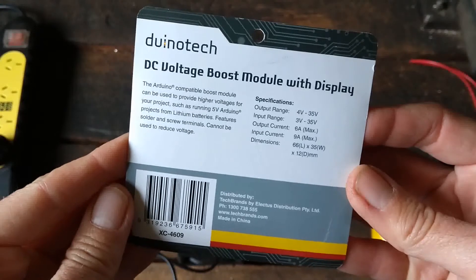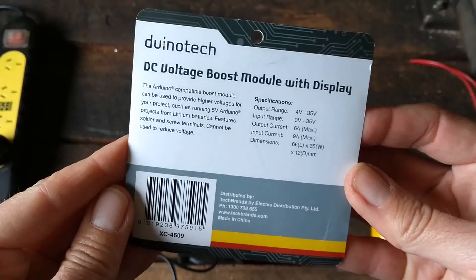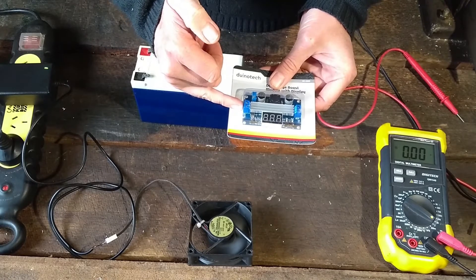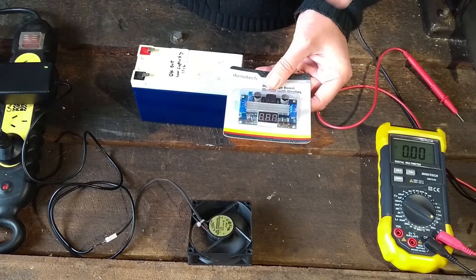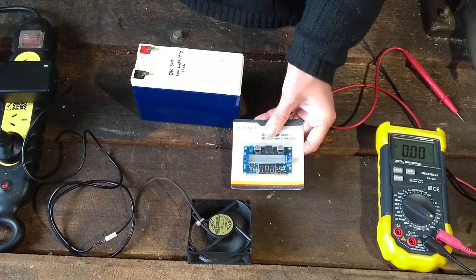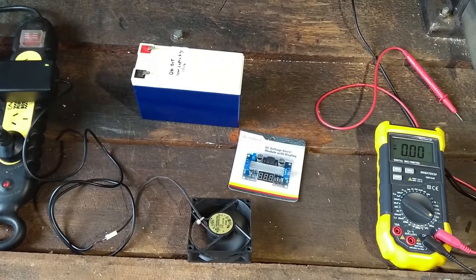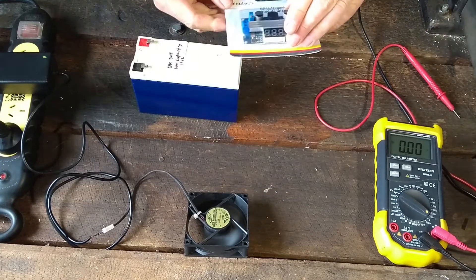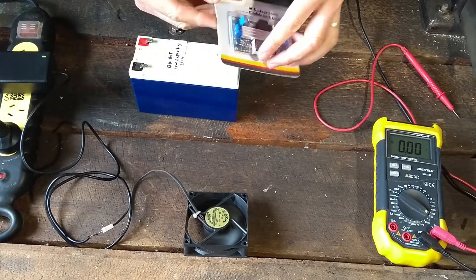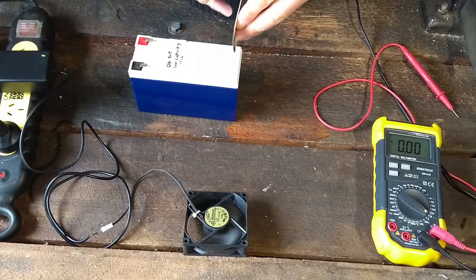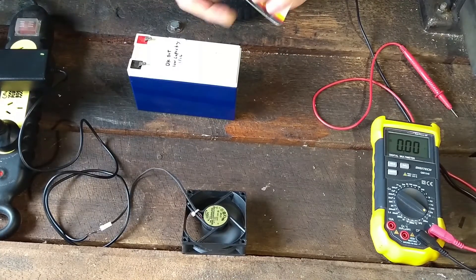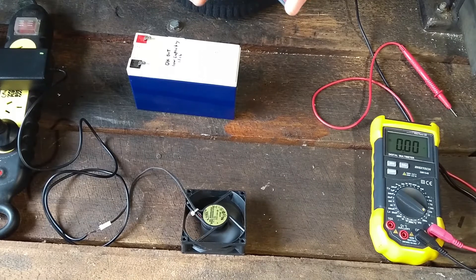So according to the thing on the back what this should be able to do is you put in your 12.4 on the left side there and you can adjust it so you can get out 13.8 volts, that's what I'm after. Now I don't actually, I haven't actually used one of these things so I don't really know what I'm in for. It has very few instructions on it. There probably are more instructions online but it looks pretty simple so let's see how we go.